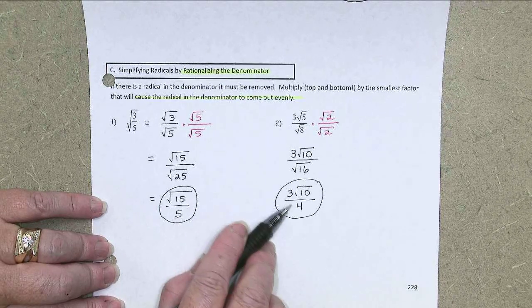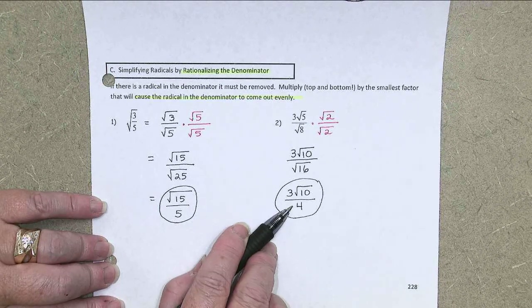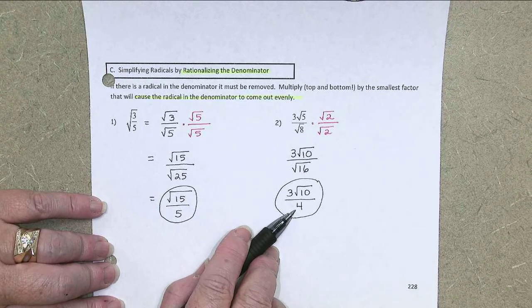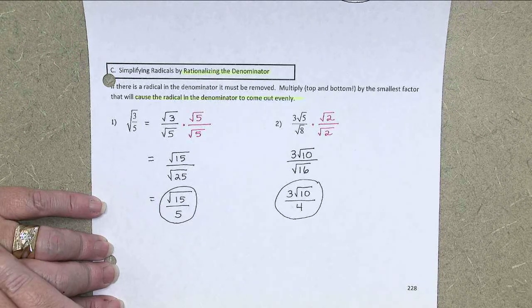Now, the 3 and the 4, if anything could happen there, if I could have reduced those, I would do it, because they're both outside radicals. But, of course, in this case, 3 fourths is already in lowest terms.